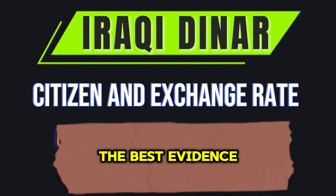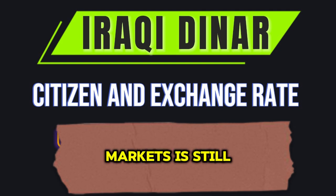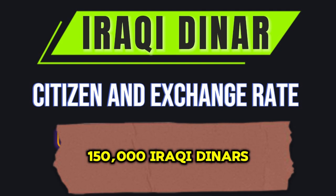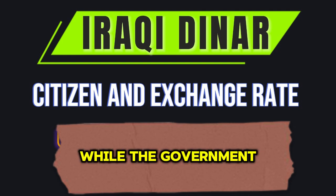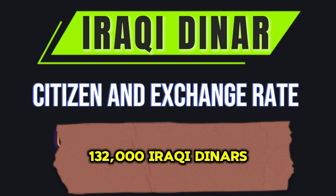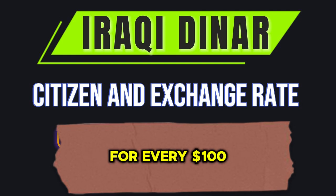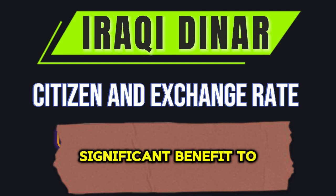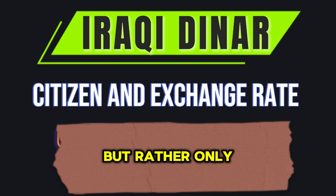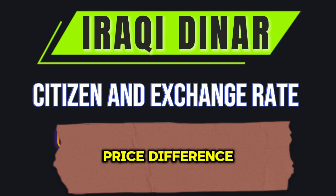The best evidence of this is that the exchange rate in most Iraqi markets is still fluctuating between 149,000 to 150,000 Iraqi dinars for every 100 US dollars, while the government exchange rate is 132,000 Iraqi dinars for every 100 US dollars. This did not bring any significant benefit to the citizen, but rather only speculators, brokers, traders, and some companies profited from the price difference.